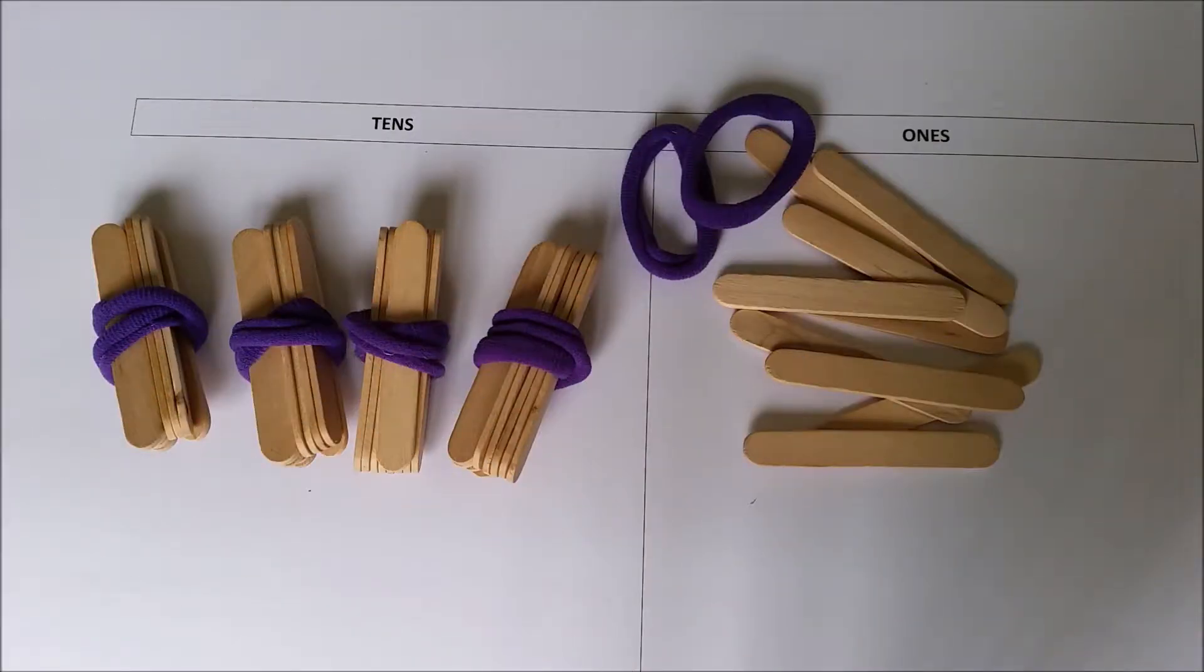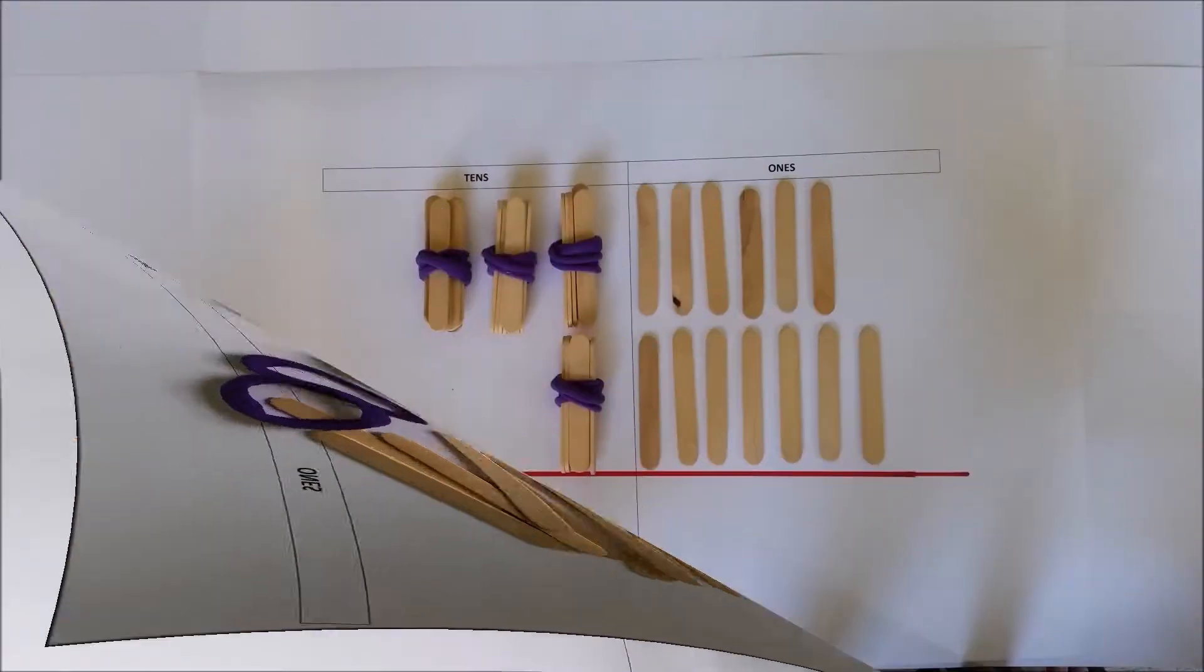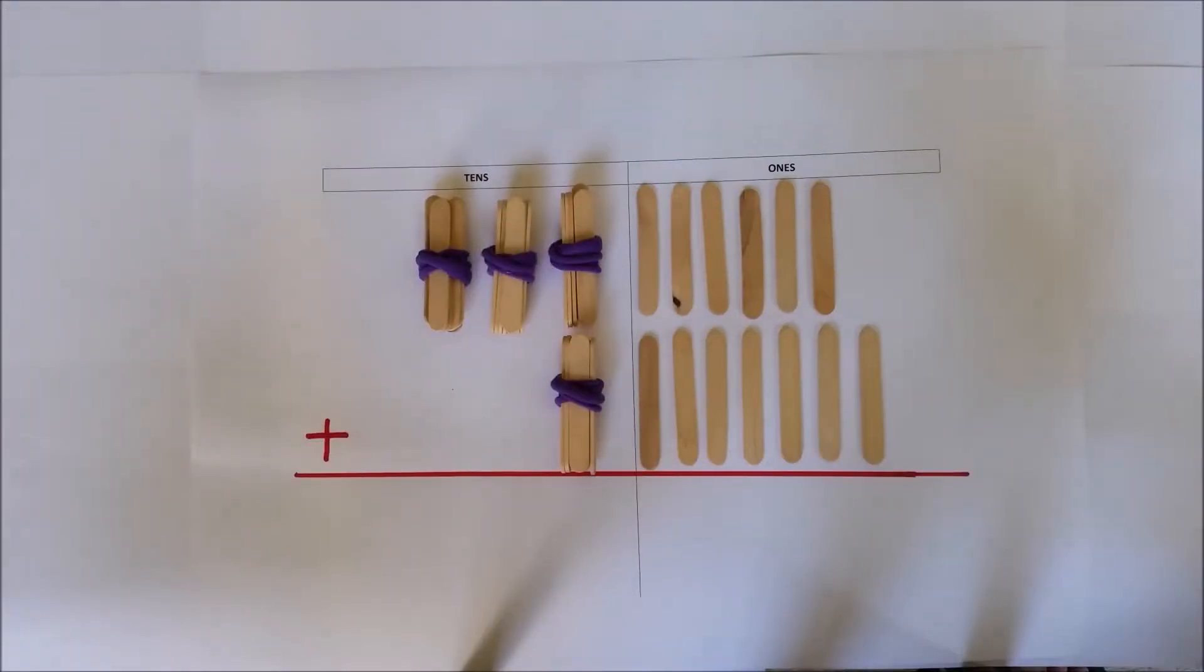Addition involving two-digit numbers is best introduced using materials such as popsicle sticks and a place value chart. This is the traditional method for addition with an emphasis on place value.